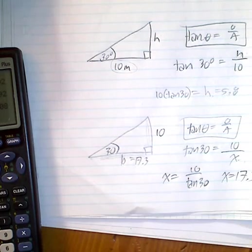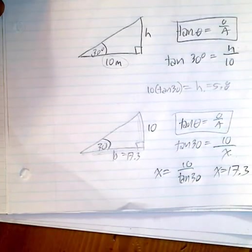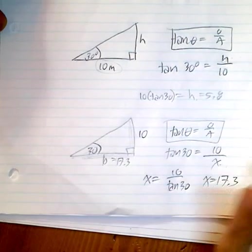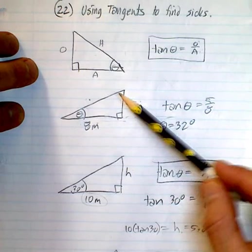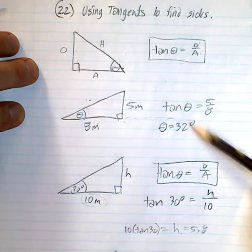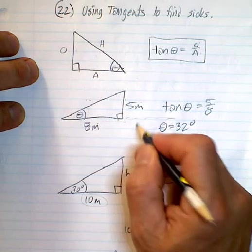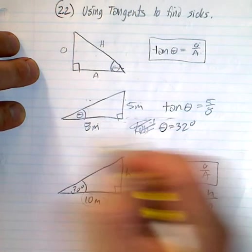These are solving for sides using the tangent ratio. What you have to understand is that every single time, no matter what we did, look here, we're looking for the angle. I was given the two sides, so I just do the second tan button.